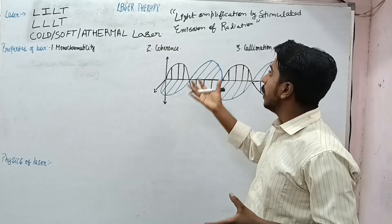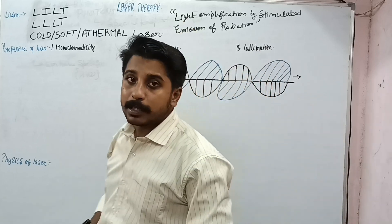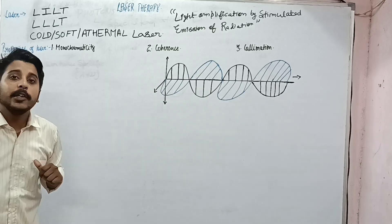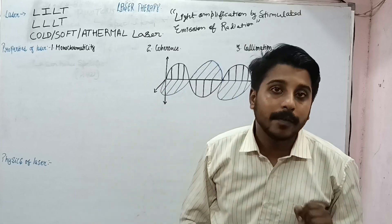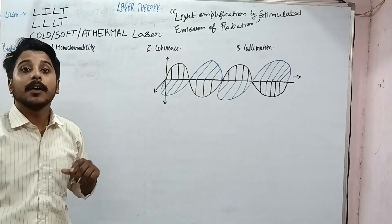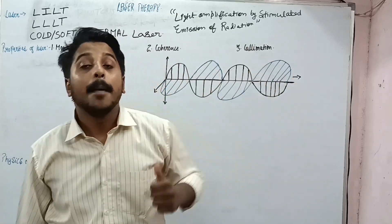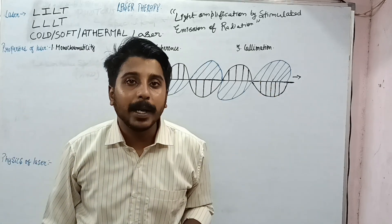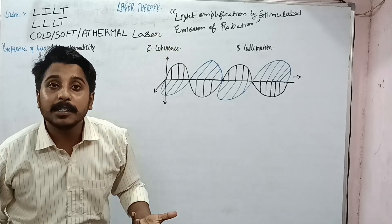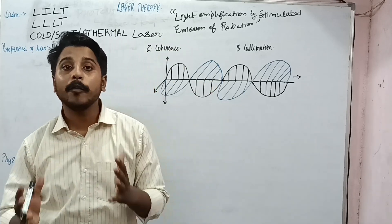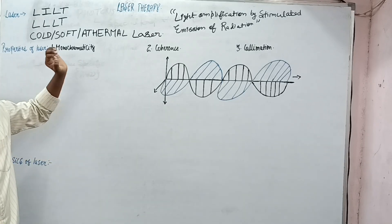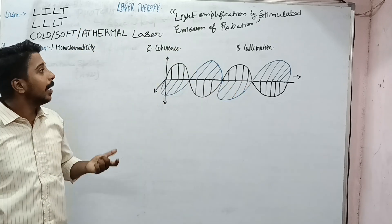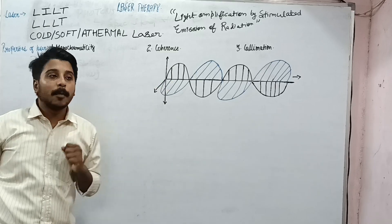Now, what are the properties of laser? Before understanding the properties, you need to understand that laser is an electromagnetic wave, which has two components: an electrical field and a magnetic field. Laser is a type of light, and light is photons — a collection of photons. So laser is the emission of a large number of photons which are monochromatic, coherent, and collimated.